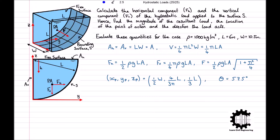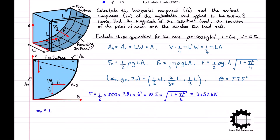Evaluating numerically with rho equals 1000 kg/m³, L equals 6 m, and W equals 10.5 m: F equals one half times 1000 times 9.81 times 6 squared times 10.5 times the square root of 1 plus pi squared over 4, which equals 3452 kilonewtons. XP equals one half times 10.5 equals 5.25 m, YP equals 4 over 3 pi times 6 equals 2.55 m, ZP equals one third times 6 equals 2 m, and theta equals 57.5 degrees.